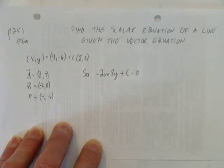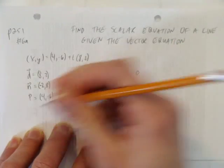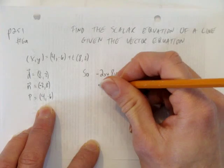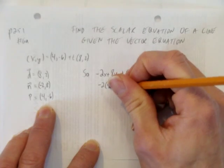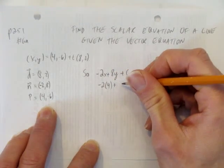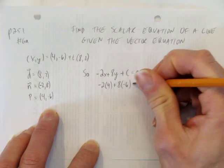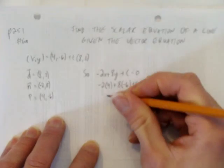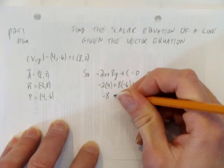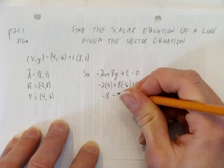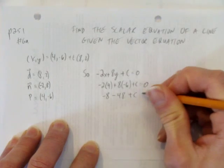And so, to solve for c, we're just going to sub in our point. That is, negative 2 times 4 plus 8 times negative 6 plus c has to equal 0. And now, we'll do the math to solve that. Negative 2 times 4 is negative 8. 8 times negative 6 is negative 48 plus c equals 0.